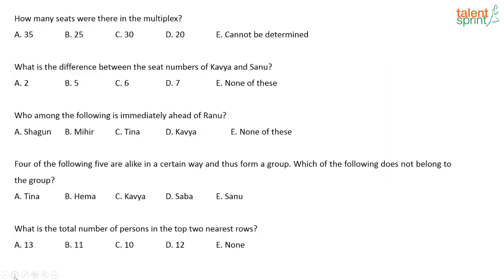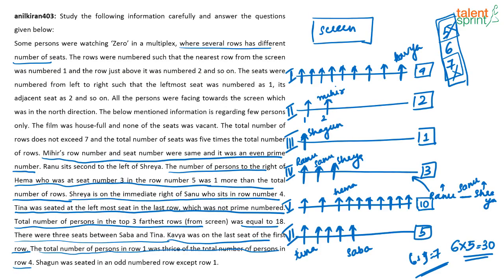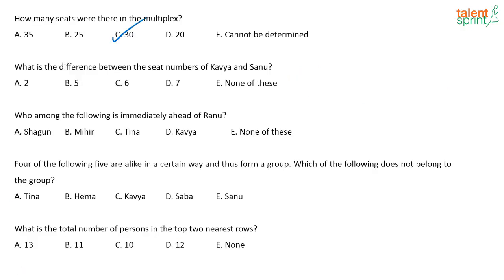Let's look at the questions. How many seats were there in the multiplex? We already found the answer: 30 seats. What is the difference between the seat numbers of Kavya and Sanu? Kavya's seat number is 9, Sanu's seat number is 2. So 9 minus 2 equals 7.